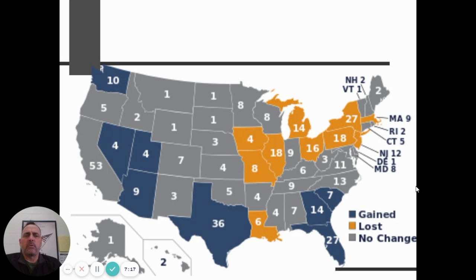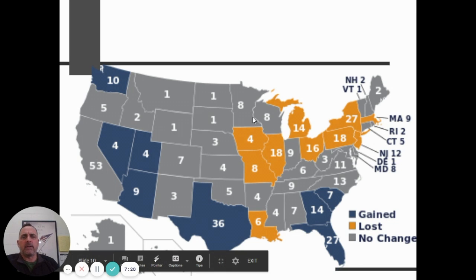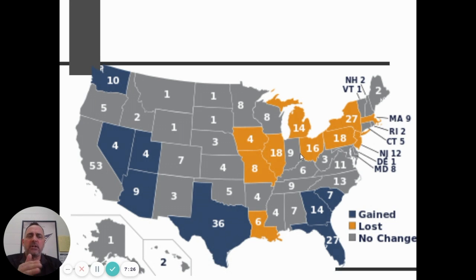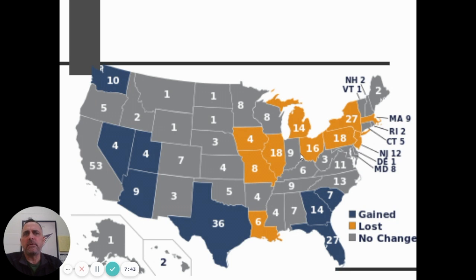The Senate was to make smaller states happy with equal representation — every state has two senators, no matter how big or small. The total House membership is set at 435. We count every person in the United States every 10 years with the census, and use that to dictate how many House members each state gets. When people move between states, the only way your state gains a House member is if another state loses one.